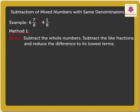Here we subtract the whole numbers 6 minus 4 and like fractions 7 upon 8 minus 1 upon 8, which equals 2 and 6 upon 8. We further reduce 6 upon 8 to its lowest terms by dividing numerator and denominator by 2, which equals 3 upon 4.